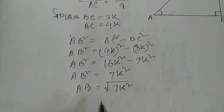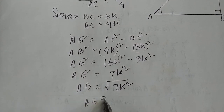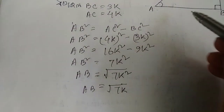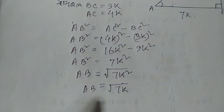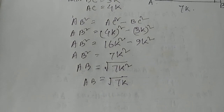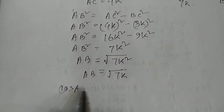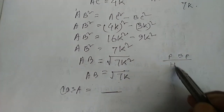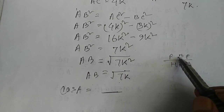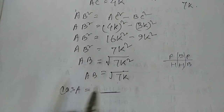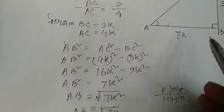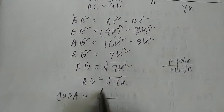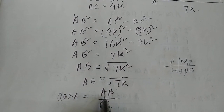AB is equal to root of 7k. So cos A is equal to AB by AC.